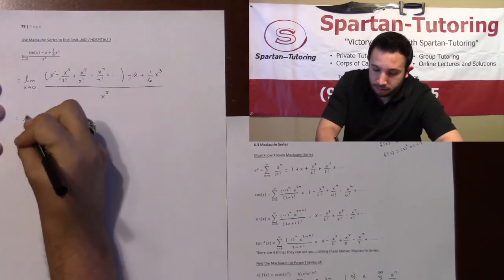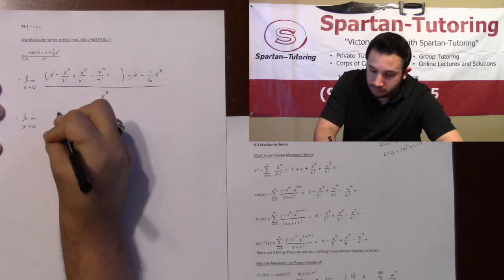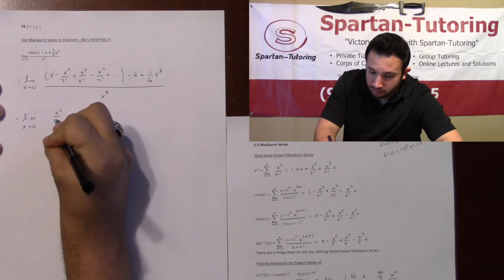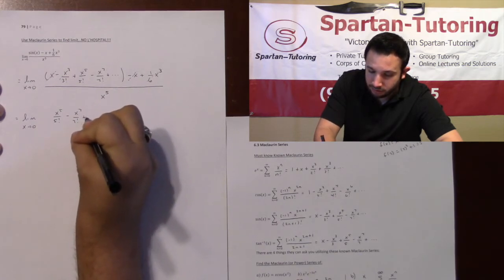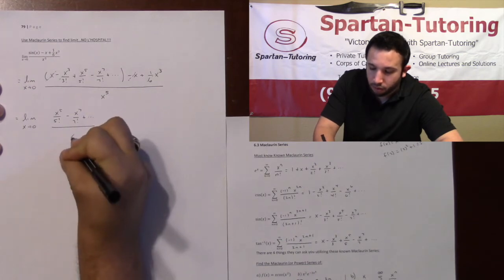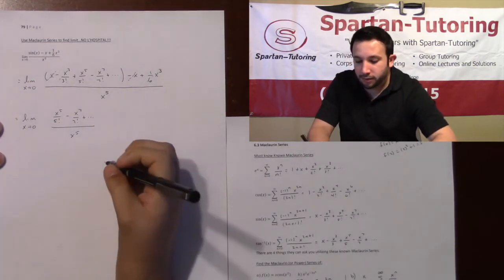What I'll be left with is the limit as x approaches 0 of x to the 5th over 5 factorial minus x to the 7th over 7 factorial and so forth, all over x to the 5th. Notice you can factor an x to the 5th out of everything.